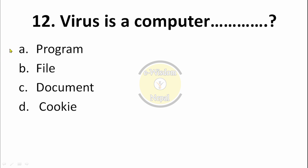Question number 12: A computer virus is a — options: program, file, document, cookie. You should know basic details about computer viruses. A computer virus is a program. So option A is the correct answer — a computer virus is a program.